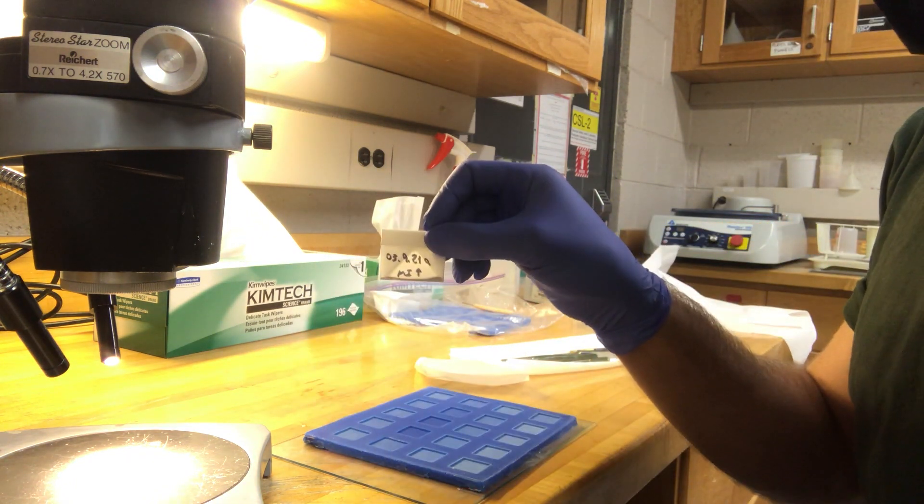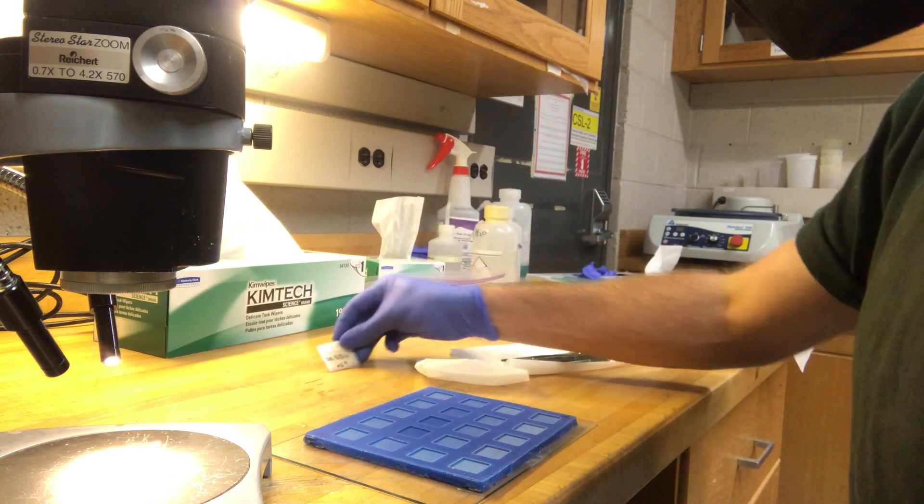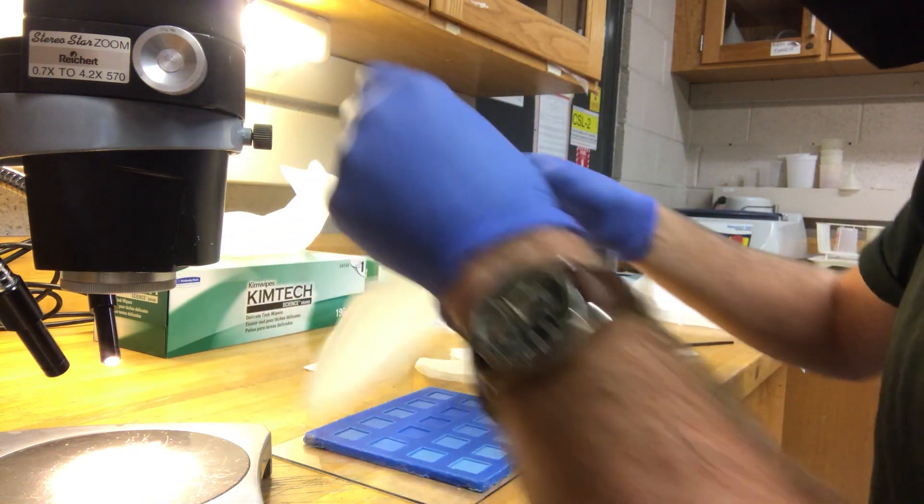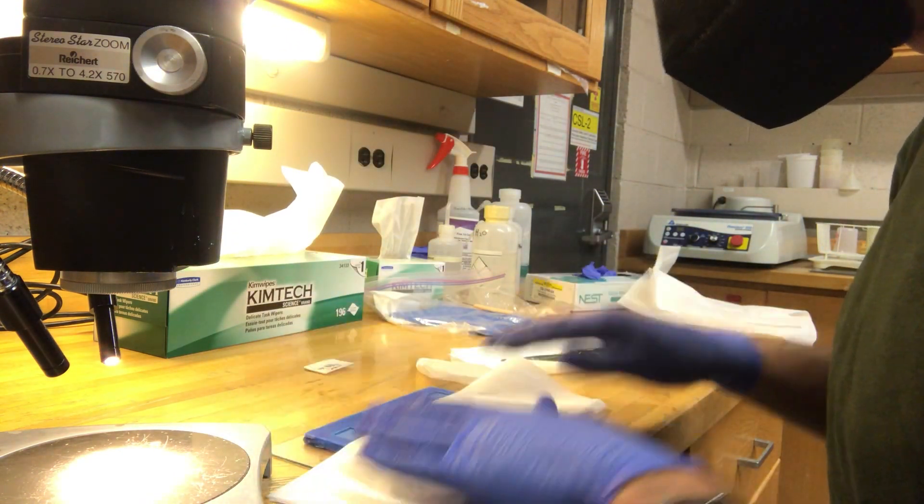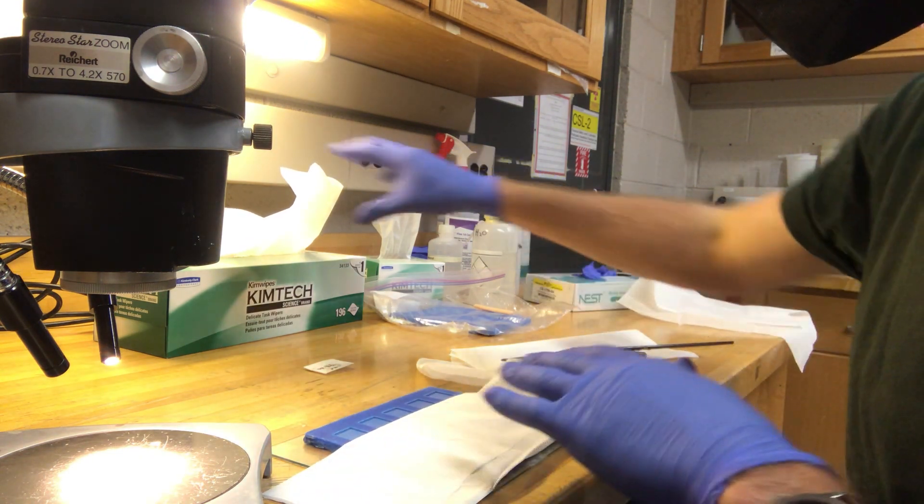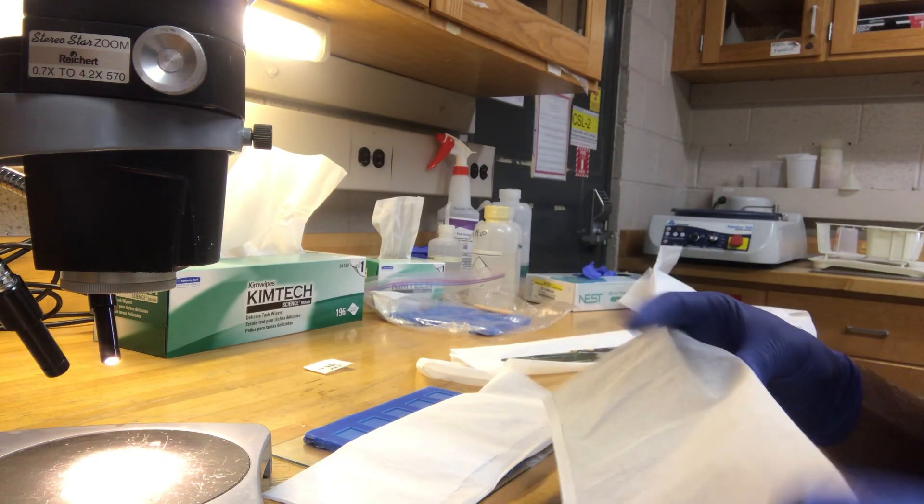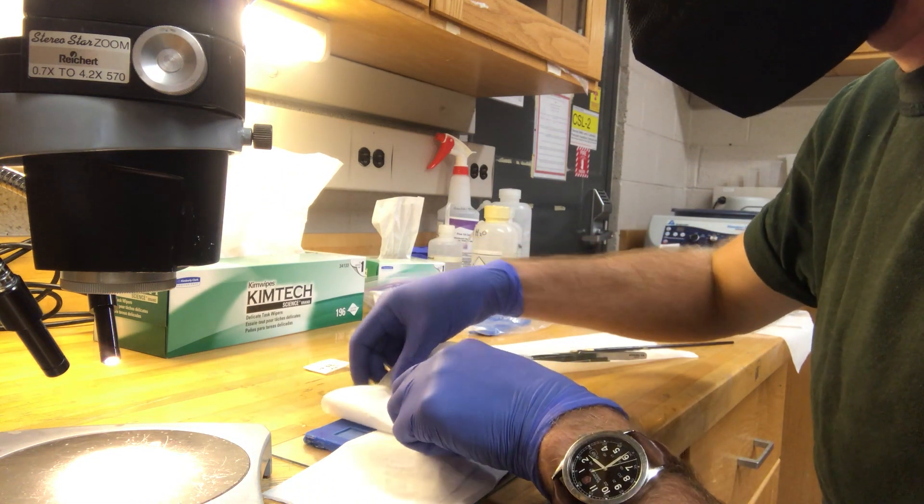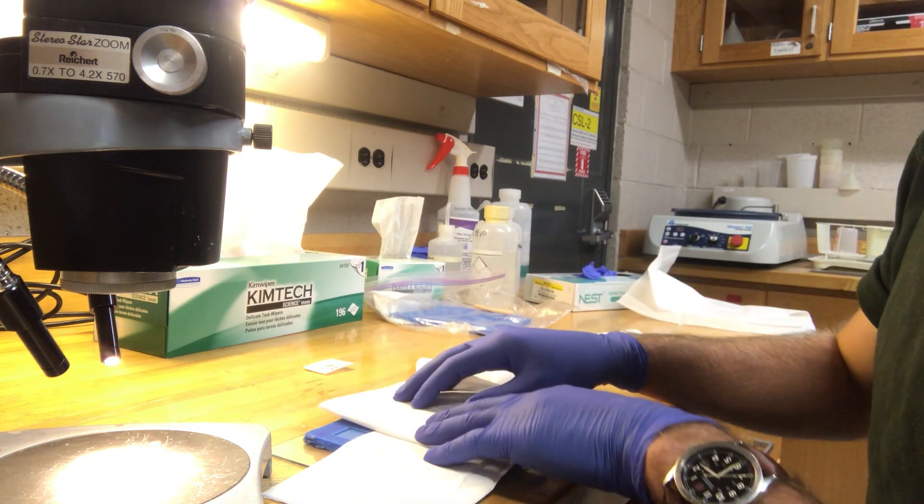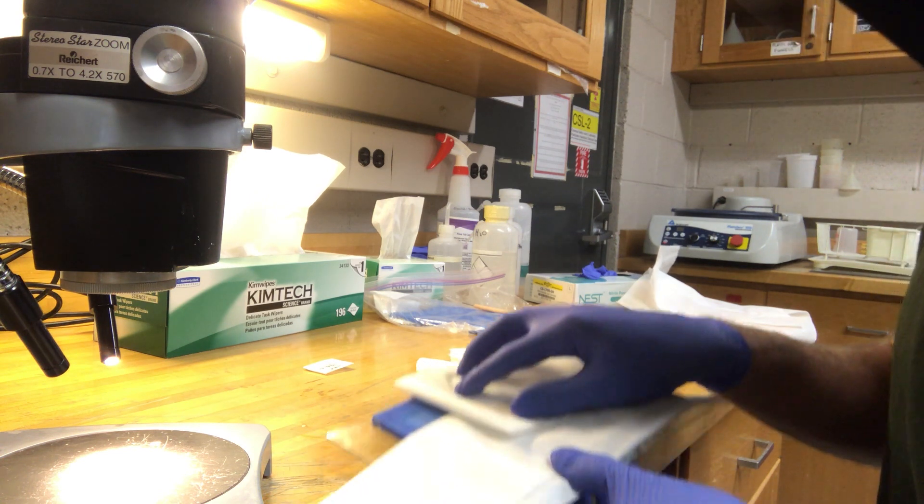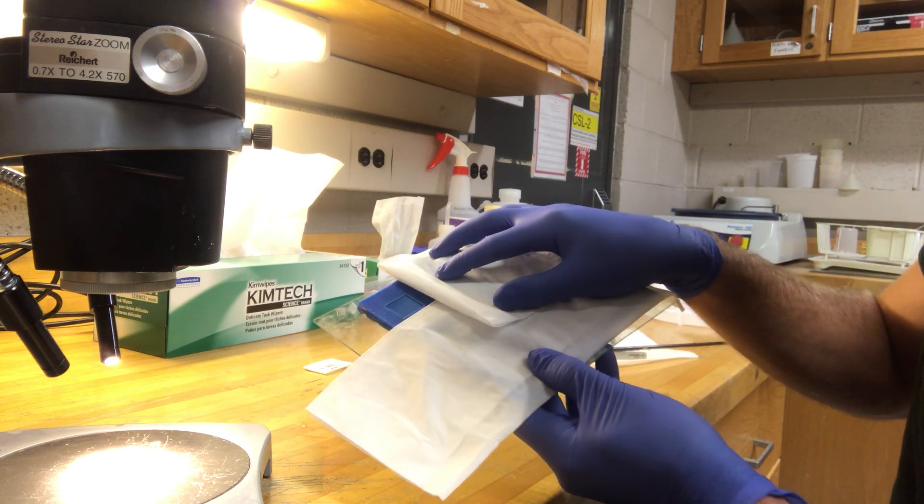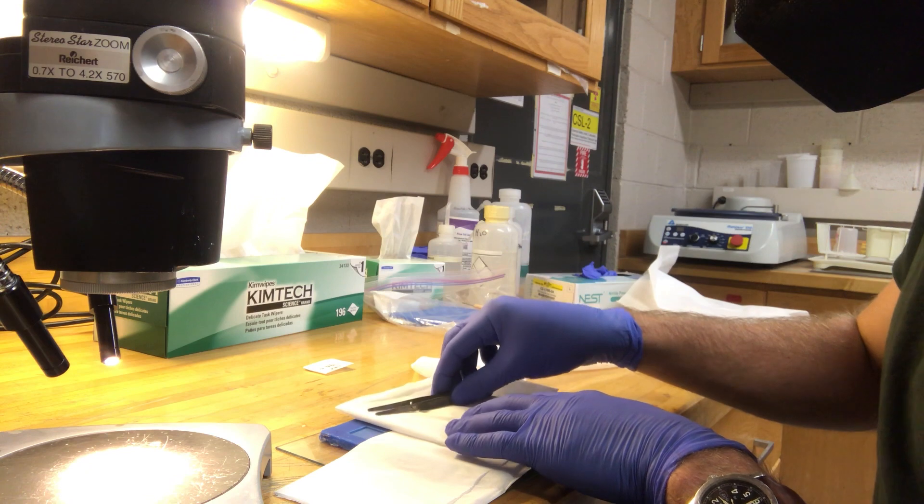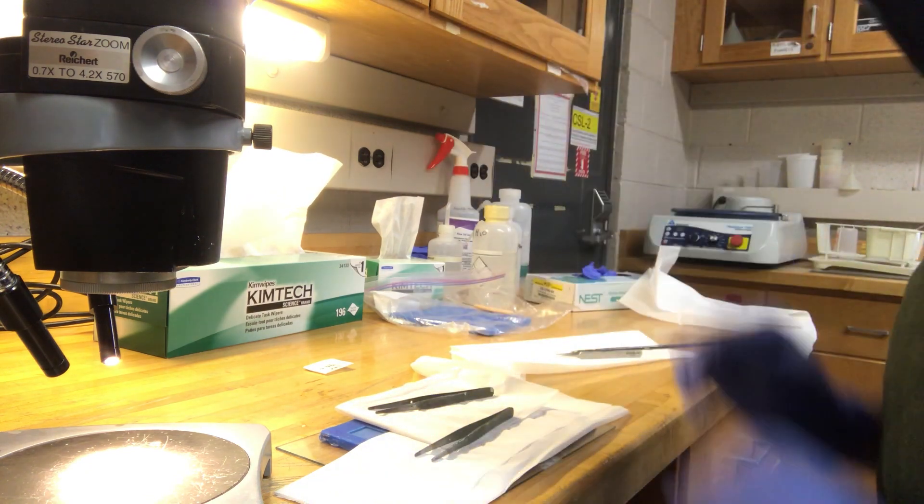What we do is get some kim wipes, fold them into nice big squares, and basically use it to cover the mold so we can avoid any contamination to other mounts when we're pouring. We've got all this kim wipe down and we're only exposing one space for us to pour our sample in. We can use these tweezers to weigh that down so it doesn't blow around in the vacuum.